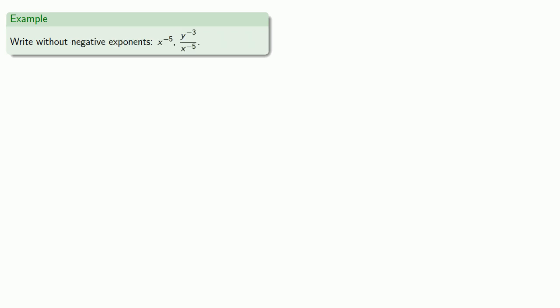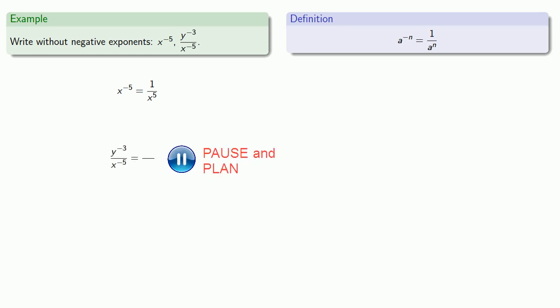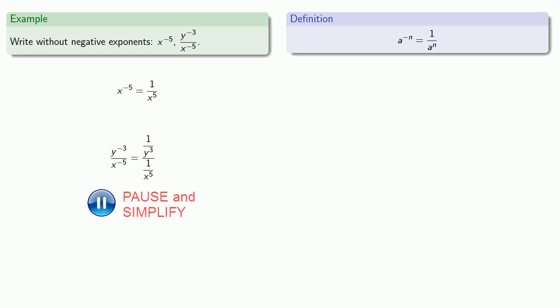That gives us an opportunity to expand what we can write in exponential notation. For example, x to power negative five — that's, by our definition, one over x to the five. Or take a more complicated expression: y to power negative three over x to power negative five. Y to power negative three is one over y to the third, and x to the negative five is one over x to the five. This is a compound fraction, so we'll invert and multiply, and we end up with a simpler expression without negative exponents: x to the five over y to the third.